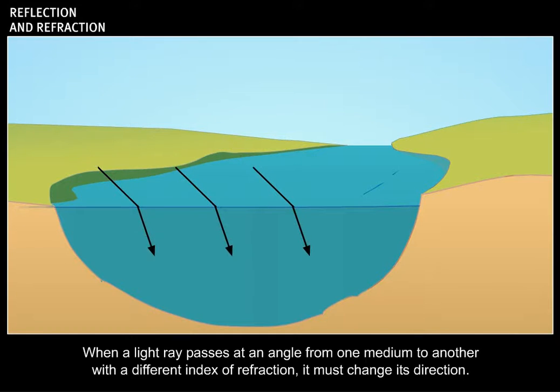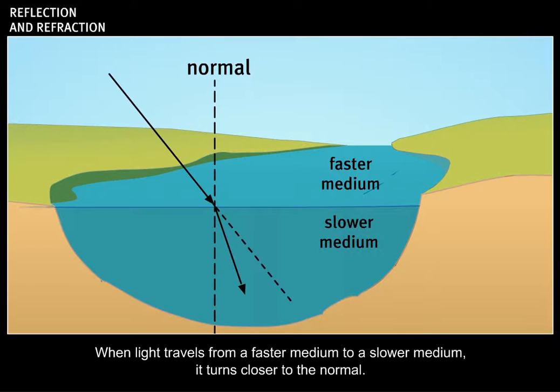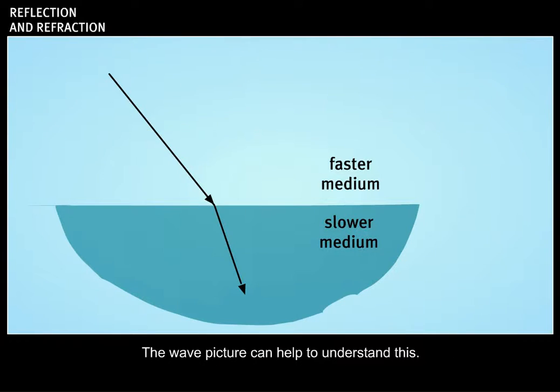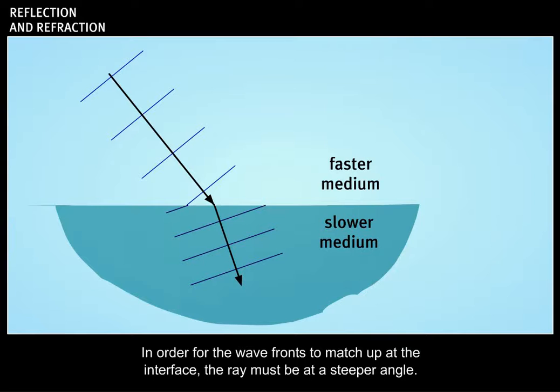When a light ray passes at an angle from one medium to another with a different index of refraction, it must change its direction. Similarly, when light travels from a faster medium to a slower medium, it turns closer to the normal. The wave picture can help to understand this. In the slower medium, the wave fronts are closer together. In order for the wave fronts to match up at the interface, the ray must be at a steeper angle.